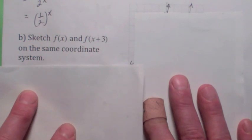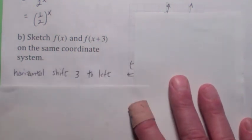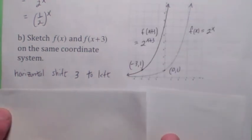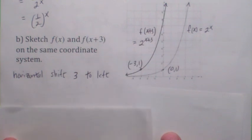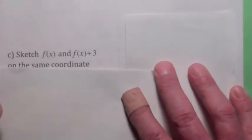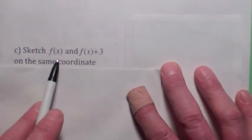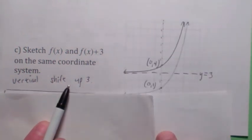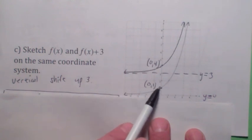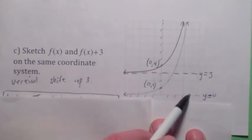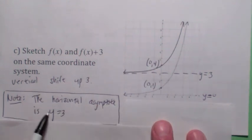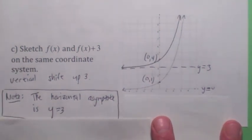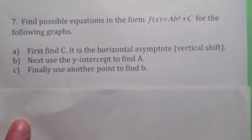What if you wanted to sketch the graph of f of x plus 3, where f of x is 2 to the x? That's a horizontal shift 3 units to the left. So the point (0, 1) becomes the point (negative 3, 1). Here's the most important one: what would the graph of f of x plus 3 look like? This is a vertical shift up 3 units. When you take the graph of 2 to the x and shift it up 3 units, the point (0, 1) becomes (0, 4). But notice what happens to the horizontal asymptote — it gets shifted up also. So the horizontal asymptote in this case is y equals 3.